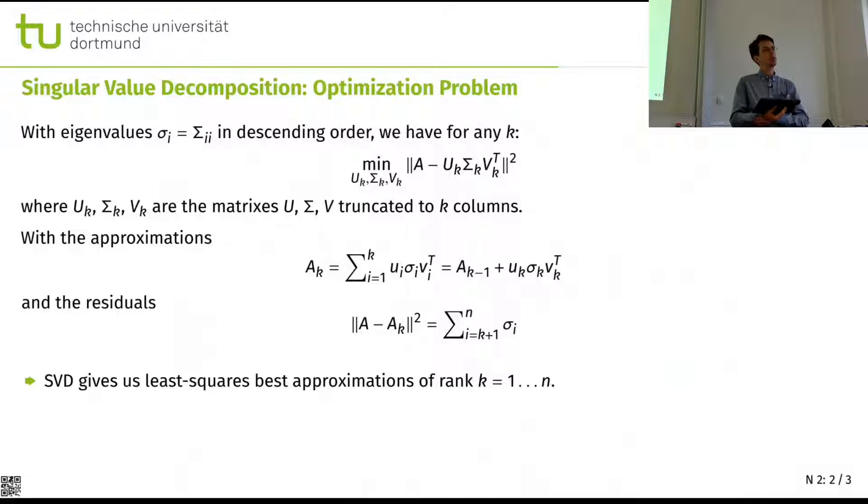Now, in singular value decomposition, we do have an optimization problem. And if we sort the eigenvalues in a descending order, we can look at the case order approximation that uses only the first k vectors, the first k diagonal entries. And we want, for each k, we want this to be the optimal approximation to the data. That is why we need to sort them in a descending order.